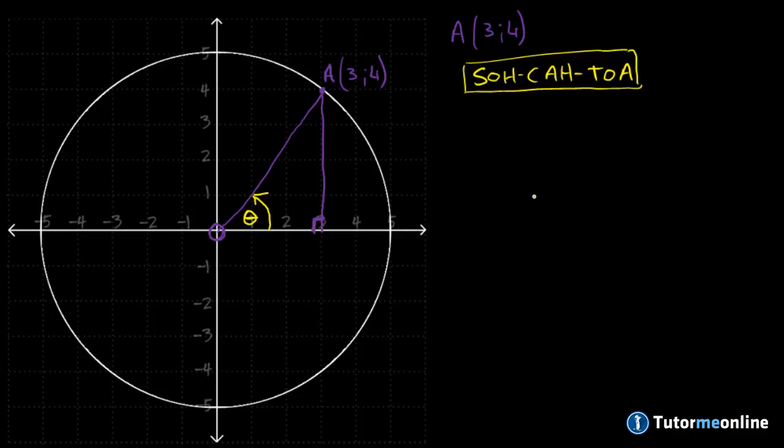Alright, so we can start off with the sine of theta is of course equal to our opposite over the hypotenuse. So we'll need to define the names of the sides of our triangle within the circle. So we know that our opposite side is the length of where our point A intersects on the y-axis. So this will be the length of y.